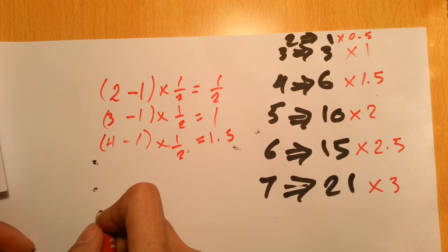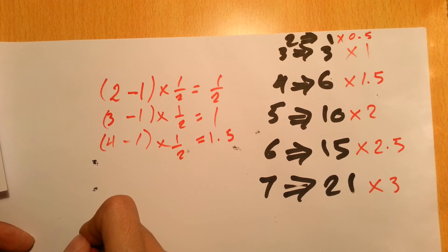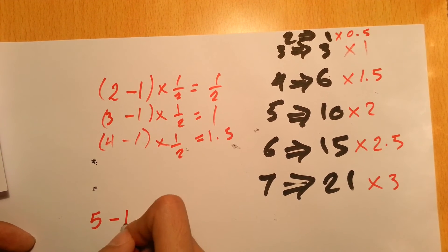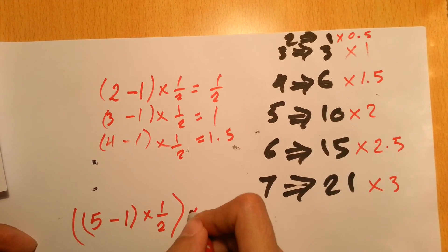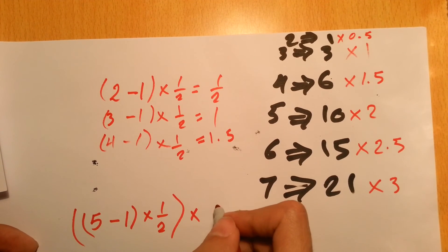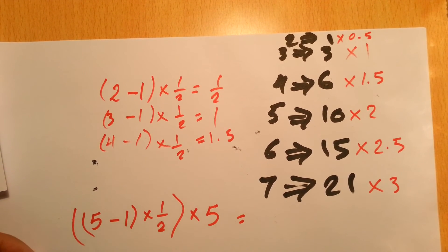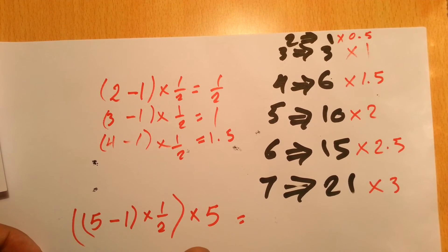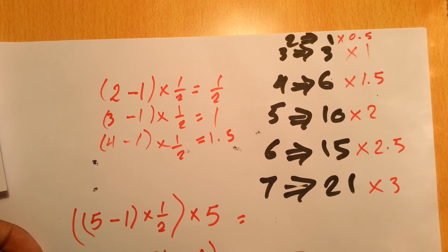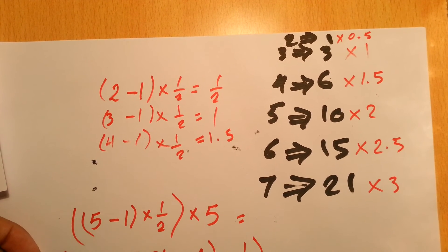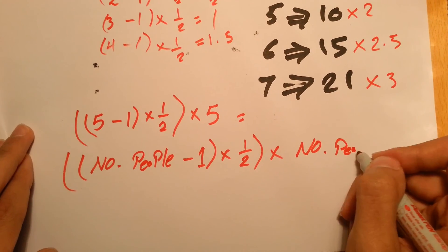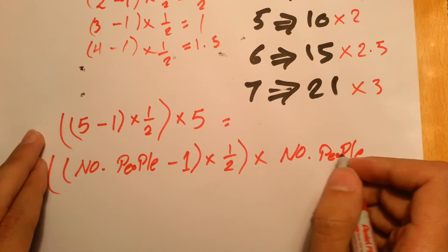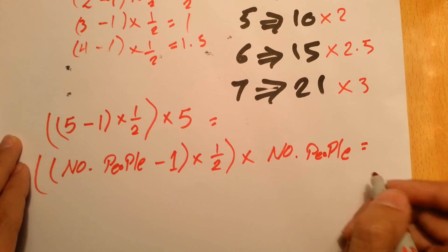All what we have to do is take the number of people, let's say we have five people, minus one times half, all of that multiplied by the original number of people gives you the number of handshakes. So it's number of people minus one times half times number of people. Oh sorry you didn't see that, try to raise the camera next time. That gives you the number of handshakes.